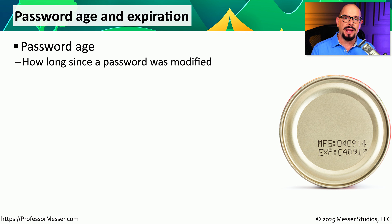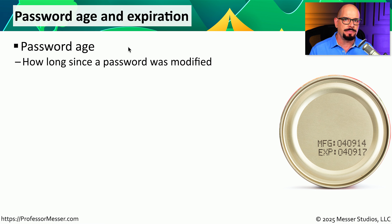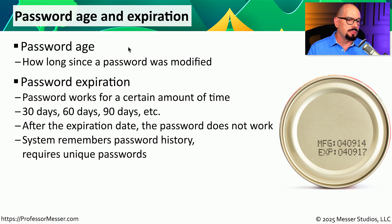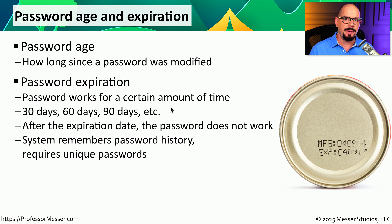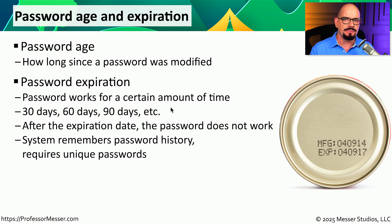Another best practice is to make sure passwords change on a regular basis. Password age is the metric that defines how long it has been since a password was last updated. Many organizations set a password expiration every 30, 60, or 90 days. After that timeframe, you are required to change your password to something different from what you've used in the past. Most systems remember your password history and require a different password every time you update.